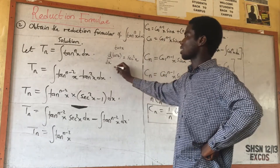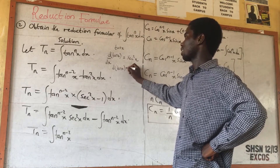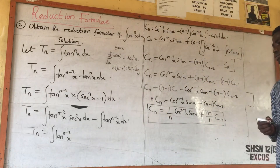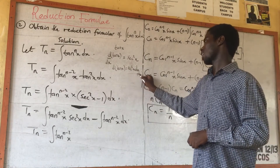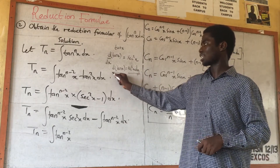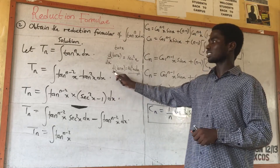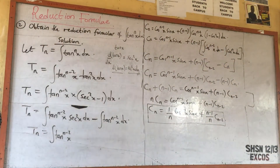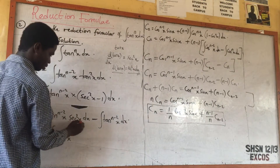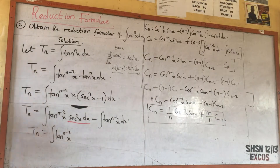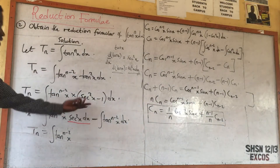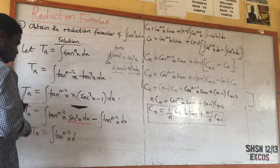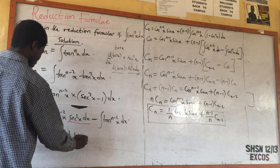If I bring ds to the other side, I have d(tan s) = sec²(s) ds. So whenever you see sec²(s) ds, you can simply write it as d(tan s). What function, when differentiated, gives sec²(s)? It's tan(s). So I can write sec²(s) ds as d(tan s).